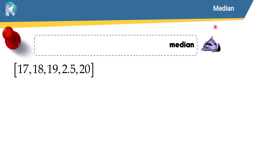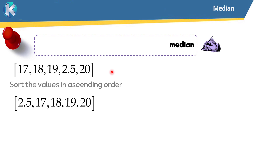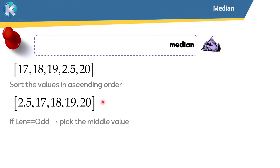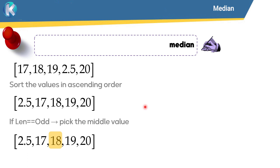Let's talk about the theory for calculating the median. Here is a list of numbers and we want to calculate the median. The first step is to sort the values in ascending order. If the number of data points is odd — we have 1, 2, 3, 4, 5 values, and 5 is an odd number — you should pick the middle value. The middle value is 18, so 18 is the median of this data.